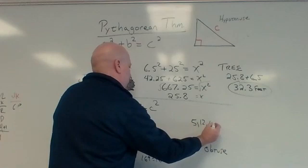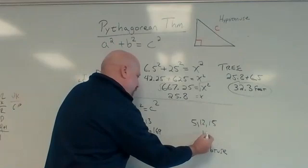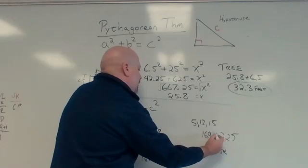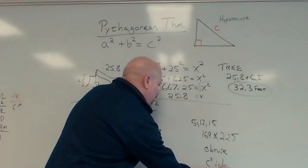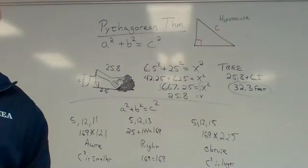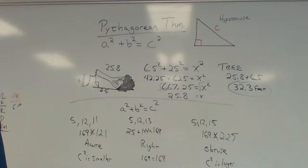If I go 5, 12, 15, I already know 5 squared is 25. 12 squared is 144. Those are 169. 15 squared is 225. So that's not true. And C squared is the key. C squared is larger or bigger. And so it's obtuse. And so those are two different ways we can use the Pythagorean theorem.